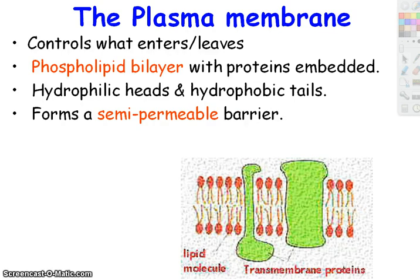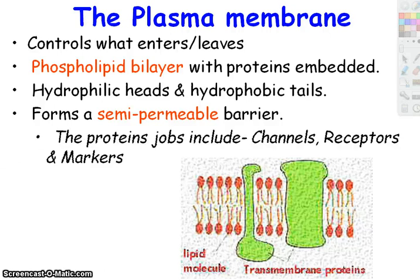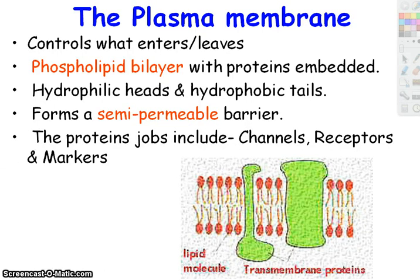The green blobs in the diagram represent proteins — not literal blobs, but folded-up proteins with primary chains and tertiary structure. Proteins do all sorts of things. One role is that they can be channels, like tunnels. For example, sugar cannot pass through the phospholipids — it's too big and has polar parts. But special membrane proteins act as channels specific to glucose and let it through. So proteins can let certain things in or out that couldn't get through the phospholipid portion.